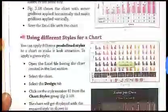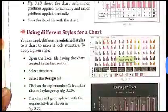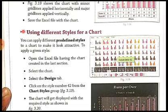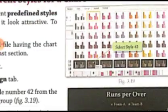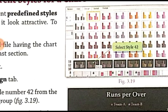In the Chart Styles group, there are different style options given. As you can see in figure 3.19, this is the chart style option where different types of chart styles are available. All these different styles are numbered, starting from 1, 2, 3, 4, and so on. You can select any of these numbered styles to apply them to your chart.